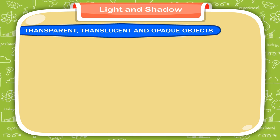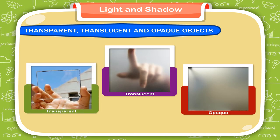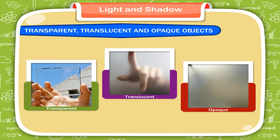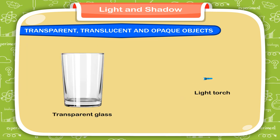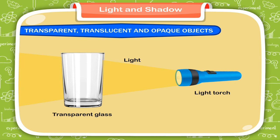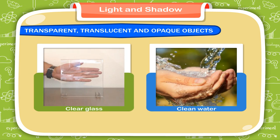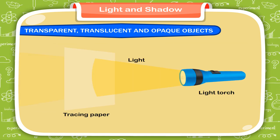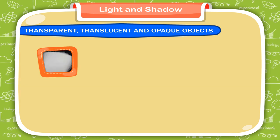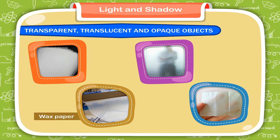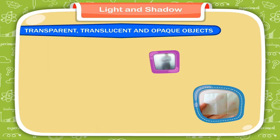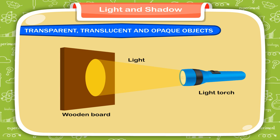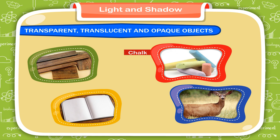Transparent, translucent and opaque objects. When light falls on an object, it can have either of three effects. The objects which allow the light to pass through them completely are called transparent objects — for example, clear glass and clean water. The objects which allow only a part of light to pass through them are called translucent objects — for example, tracing paper, frosted glass, wax paper and oil paper. The objects which do not allow the light to pass through them at all are called opaque objects. No object can be viewed through these objects — for example, wood, chalk, notebook and bodies of animals.